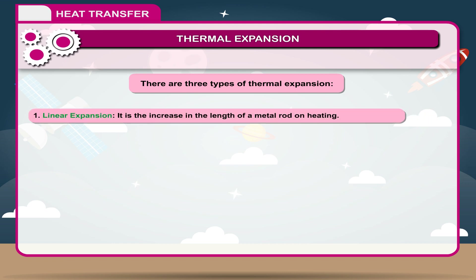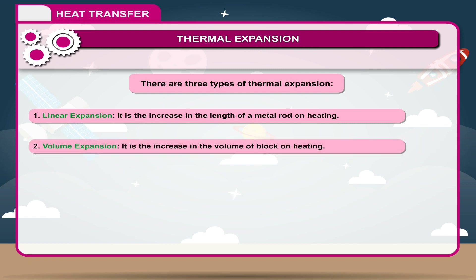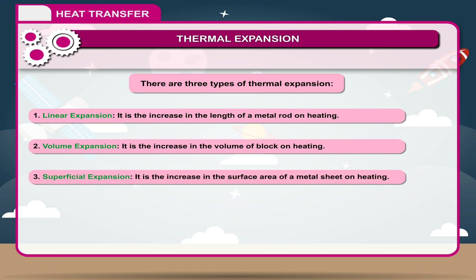Linear expansion is the increase in the length of a metal rod on heating. Volume expansion is the increase in the volume of a block on heating. Superficial expansion is the increase in the surface area of a metal sheet on heating.